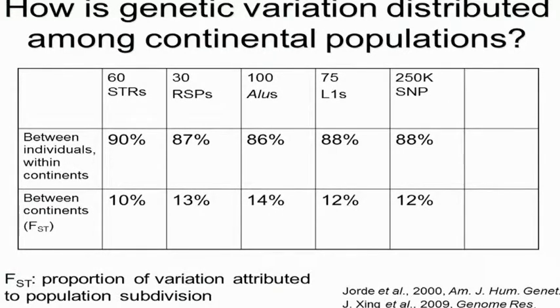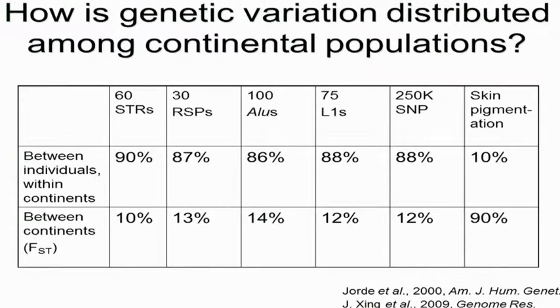One of the most basic questions we can ask is how is genetic variation distributed among populations? Using a convenient unit of subdivision — the major continents — we see that for a variety of different kinds of genetic systems, whether short tandem repeats, restriction site polymorphisms, mobile elements, or SNP data, most variation occurs between individuals within these major populations. Only a relatively small proportion — typically 10 to 12 percent — is due to differences between populations at that level, and that's very consistent across different kinds of genetic systems.